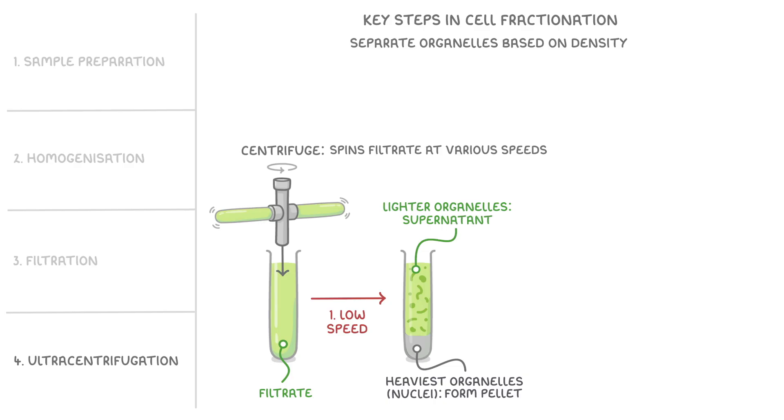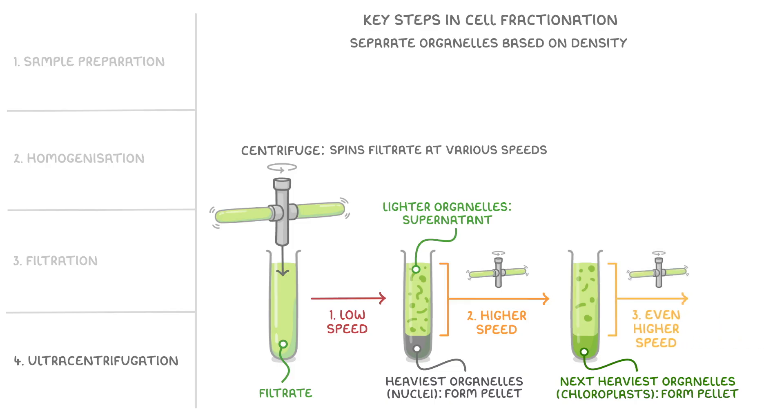Next we transfer the supernatant to a new test tube and spin it at a higher speed so the next heaviest organelles which in our sample from the plant tissue would be the chloroplasts form a pellet. We continue this process at even higher speeds and increase the speed each time until all the organelles are separated from heaviest to lightest.